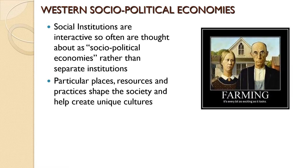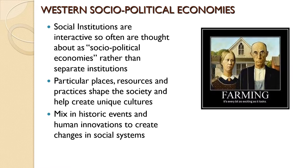In our last module we talked about social institutions as a series of questions that have to be answered, and these questions are answered in multiple ways, helping create huge variations among cultures. Those answers are shaped by things like geography, history, and cultural practices. Historic events have a lot to do with why a certain political economy exists in a certain place at a certain time.